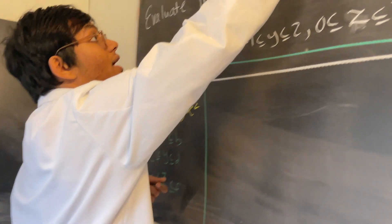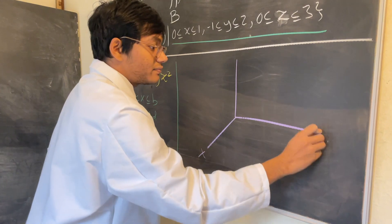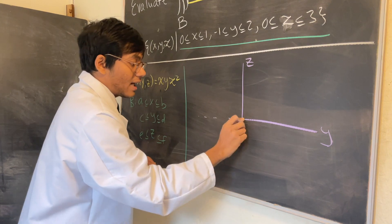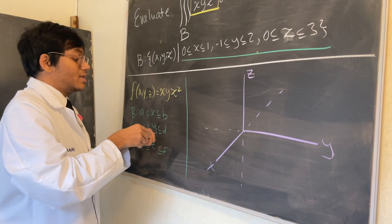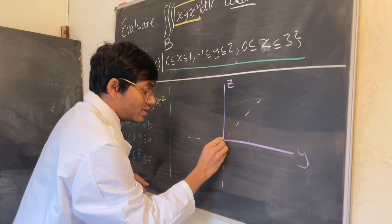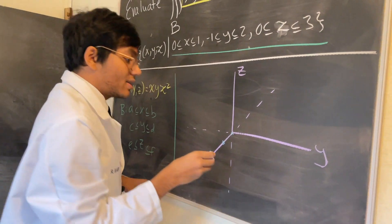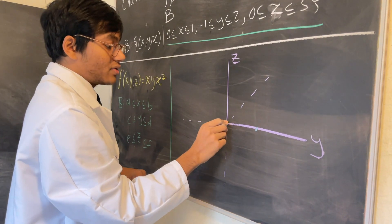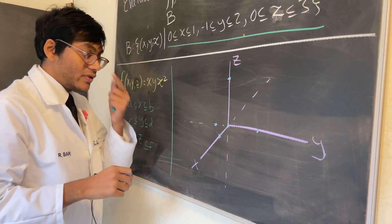Now we want to take a look at how our volume looks like. I'm going to draw the X, Y, and Z axes. Our X is bounded between 0 and 1, Y is between -1 and 2, and Z is between 0 and 3.